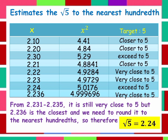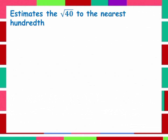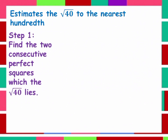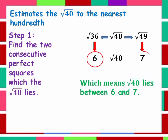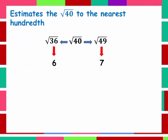Another example: estimate the square root of 40 to the nearest hundredth. First, find the two consecutive perfect squares between which the square root of 40 lies. The square root of 40 is between the square root of 36 and the square root of 49. The square root of 36 is equal to 6 and the square root of 49 is equal to 7, which means the square root of 40 lies between 6 and 7.